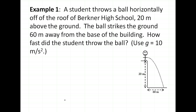Let's put those symbols to use. Example one: a student throws a ball horizontally off the roof of Berkner High School, 20 meters above the ground. The ball strikes the ground 60 meters away from the base of the building. How fast did the student throw the ball, using 10 meters per second squared for gravity? So let's use our GUESS method. Our givens: x naught, our initial horizontal distance, is zero — which is what it will be most of the time.